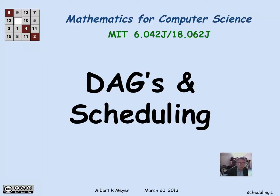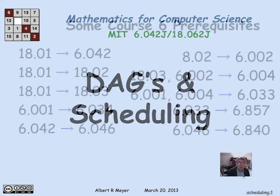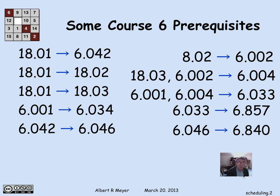In the last video, we saw why if you represent scheduling constraints among courses by a digraph, it's critical that that digraph be a DAG. Let's now look at this scheduling issue represented by DAGs in more detail.